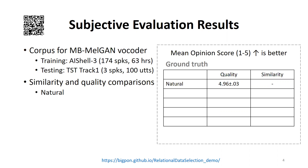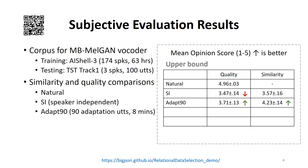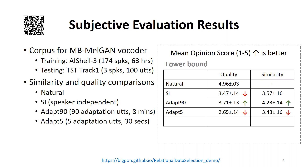Natural utterances achieved almost 5 out of 5. However, the speaker mismatch caused significant quality degradation of the speaker-independent vocoder. After speaker adaptation with 8-minute target speaker data, both quality and similarity are significantly improved. However, if the speaker adaptation data is only 30 seconds, both quality and similarity are further degraded.